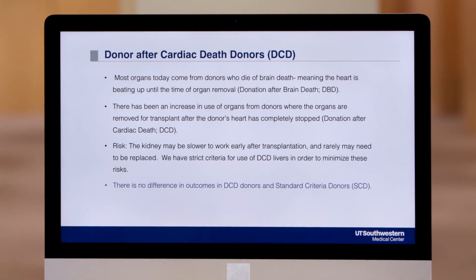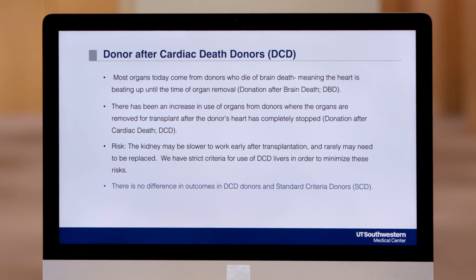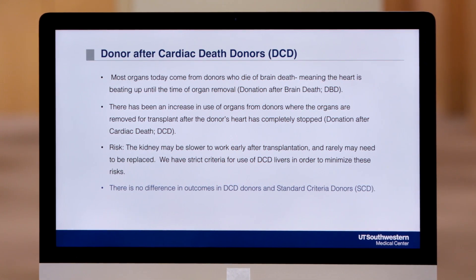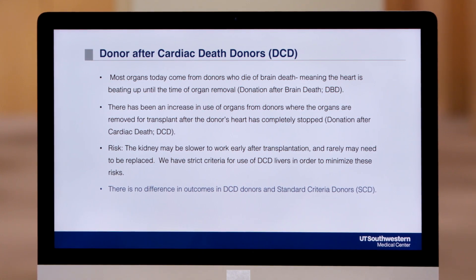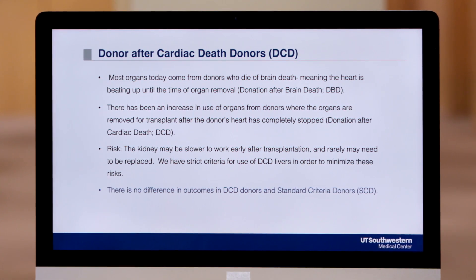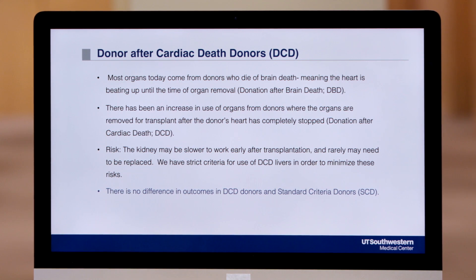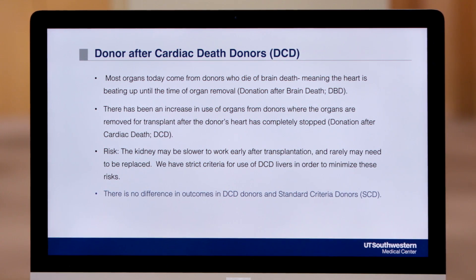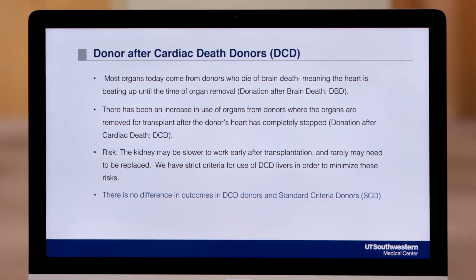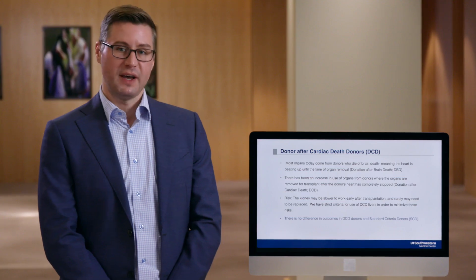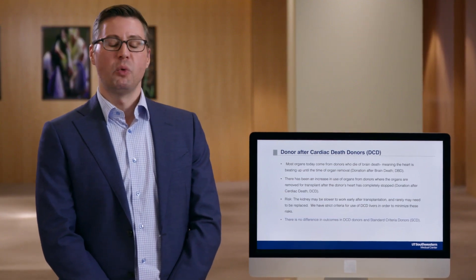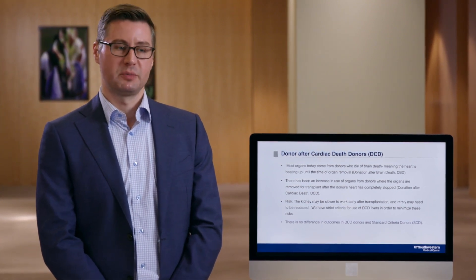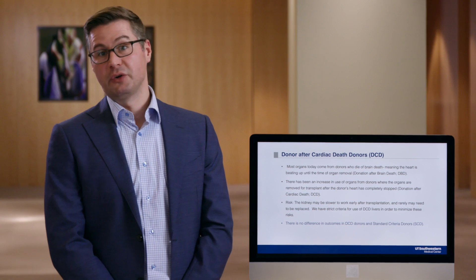The fifth type of donor is one who has passed away after cardiac death. Most organs today are from donors who die brain death, meaning the heart is still beating at the time of organ removal or procurement. In this case, the donor has undergone cardiac death and the heart has stopped. The risk that comes with this donor has nothing to do with infections or other issues — it's more that the kidney itself may be sleepy at the time of transplantation, which we call delayed graft function.